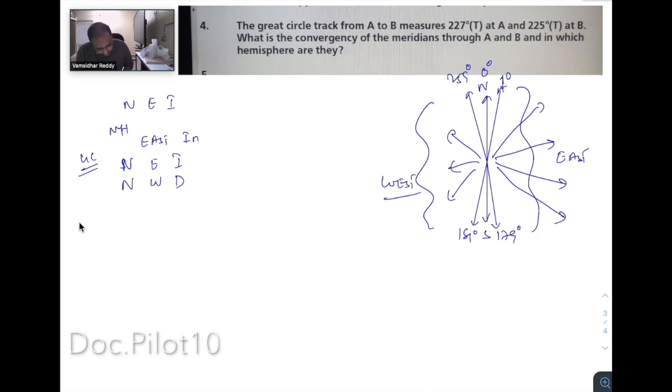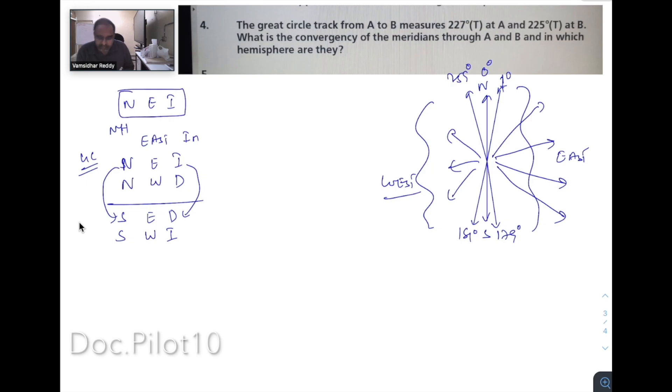Now, if you change North to South, and if you are going East, the track will decrease. In Southern Hemisphere, if you are going West, the track should increase. So if you just remember NEI, you should know: if you are in which hemisphere, if your track increases, are you going East or West? Or if you are in which hemisphere going West, what happens to your track? North East India.